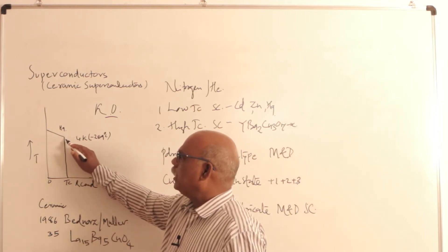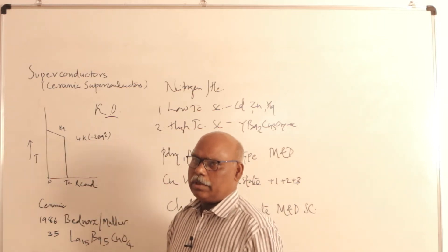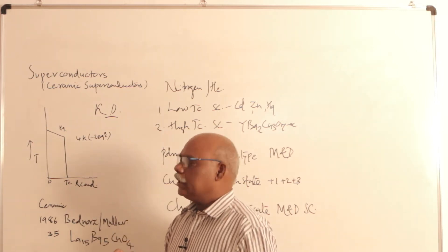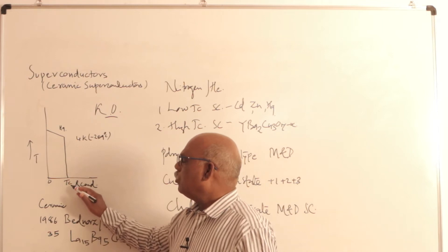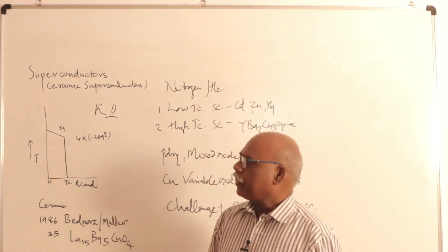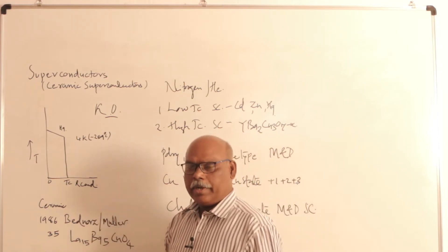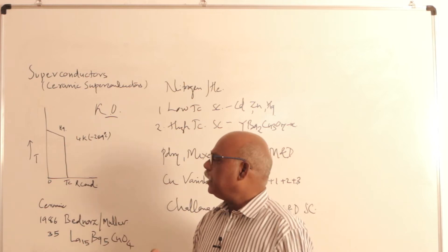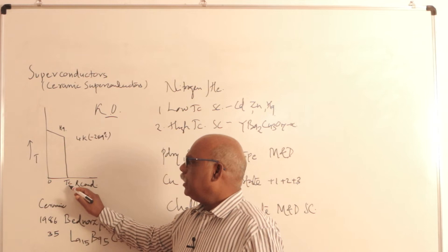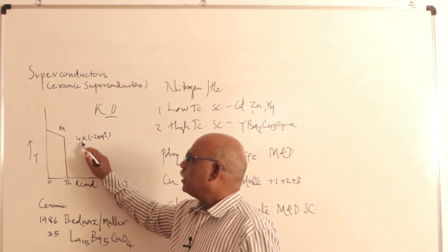Hence this material goes superconducting. Superconductors are materials which conduct electricity without any resistance, known as superconducting materials. The temperature at which the material goes superconducting is known as critical temperature, or Tc in brief. This is the critical temperature for mercury.